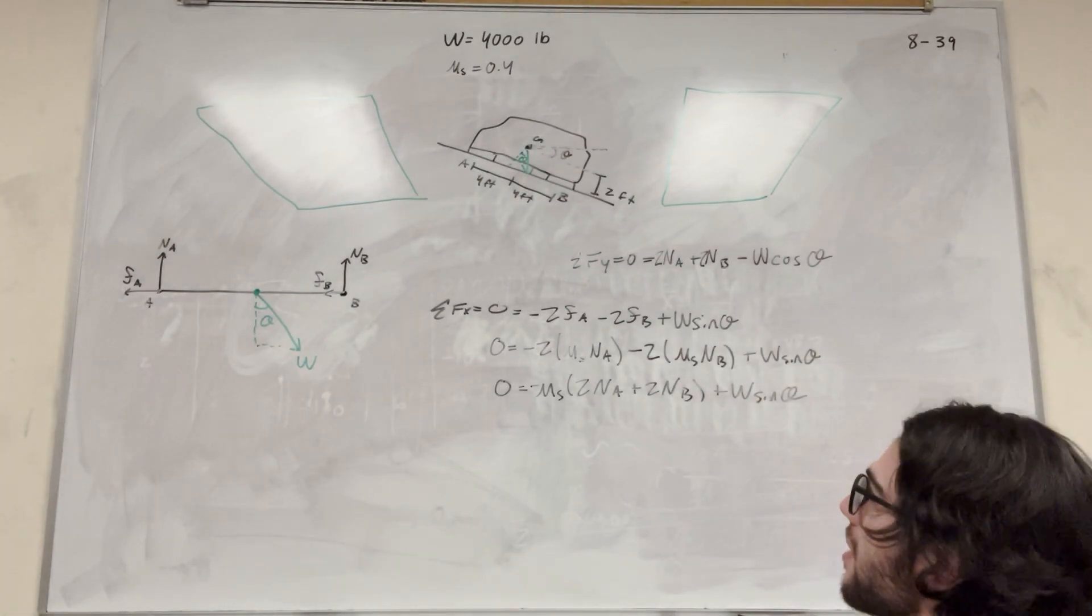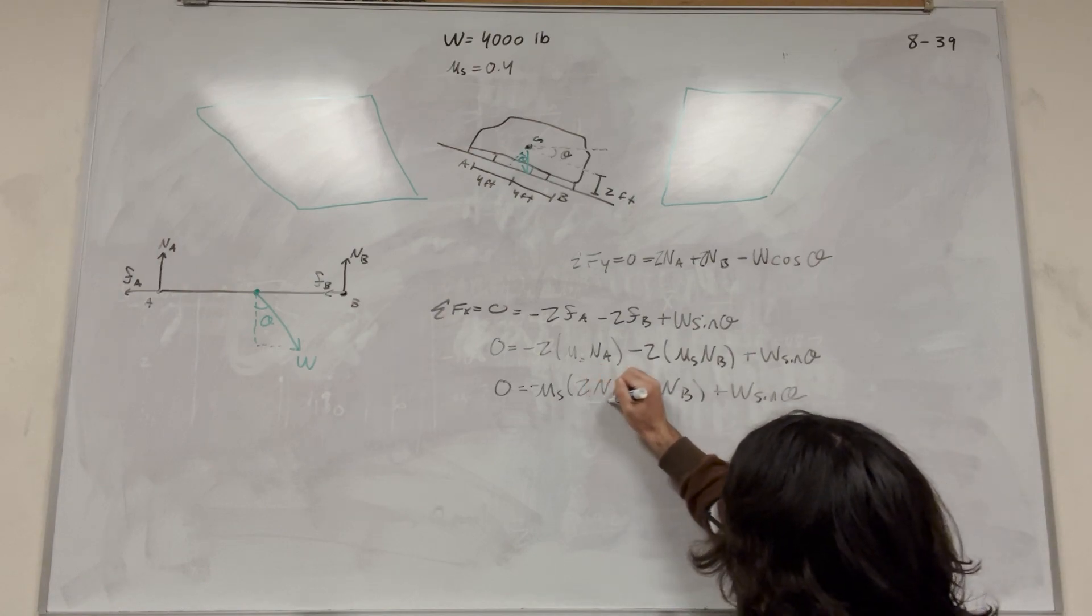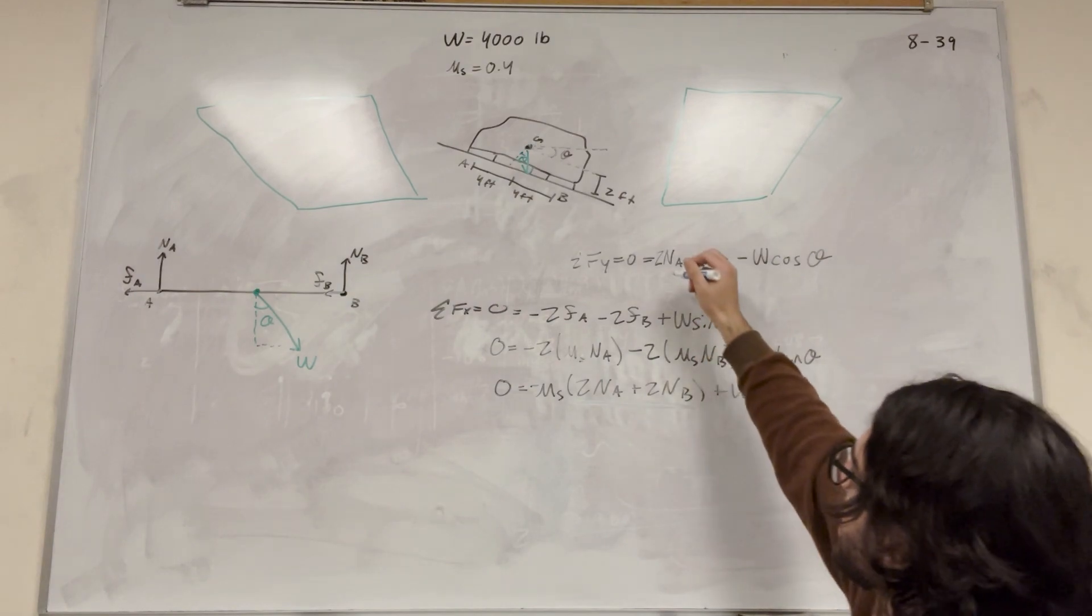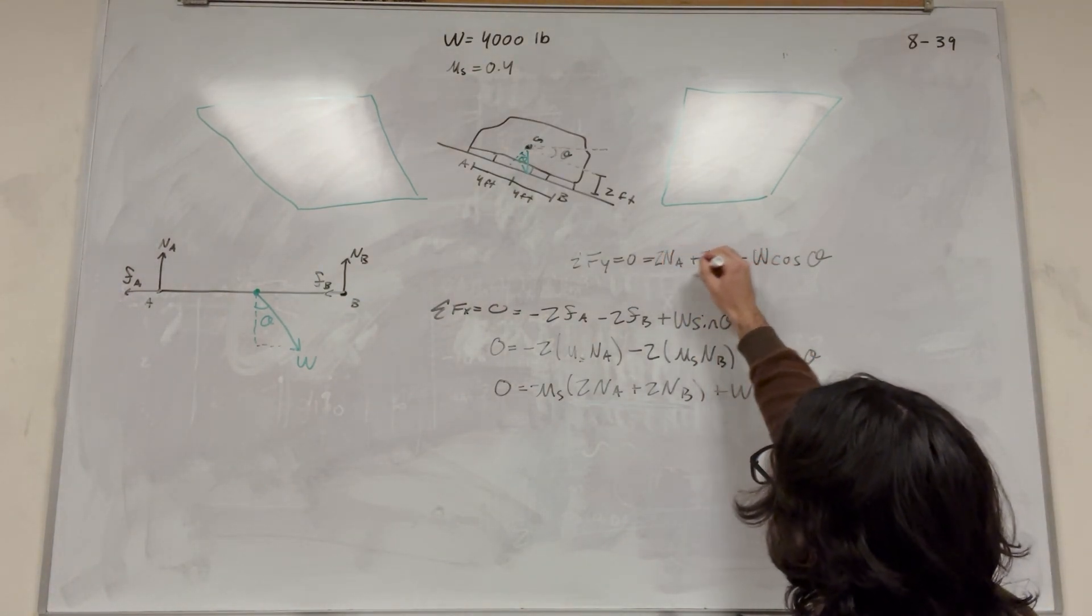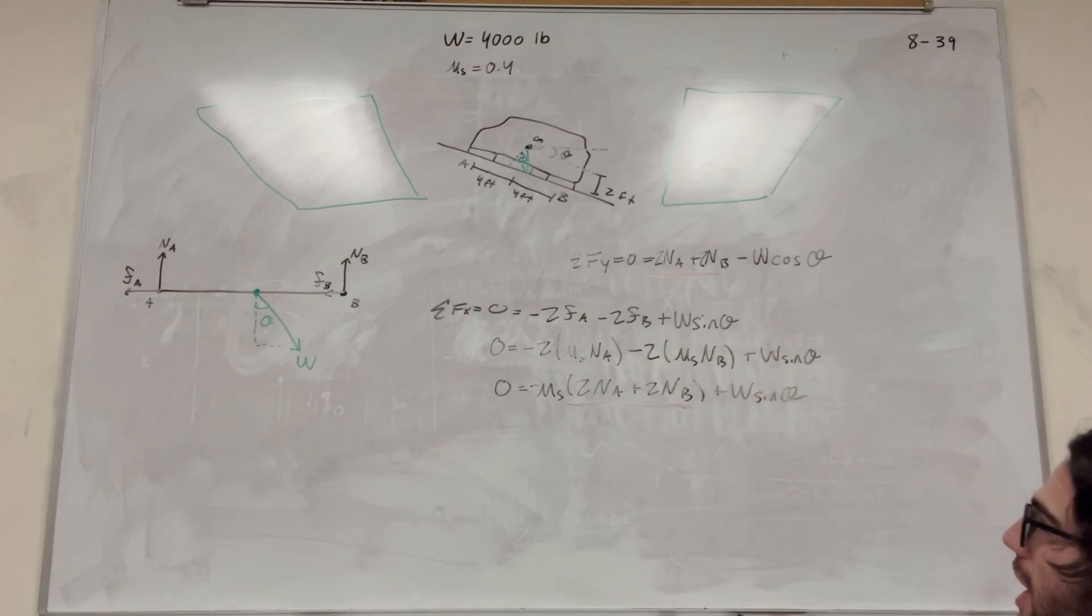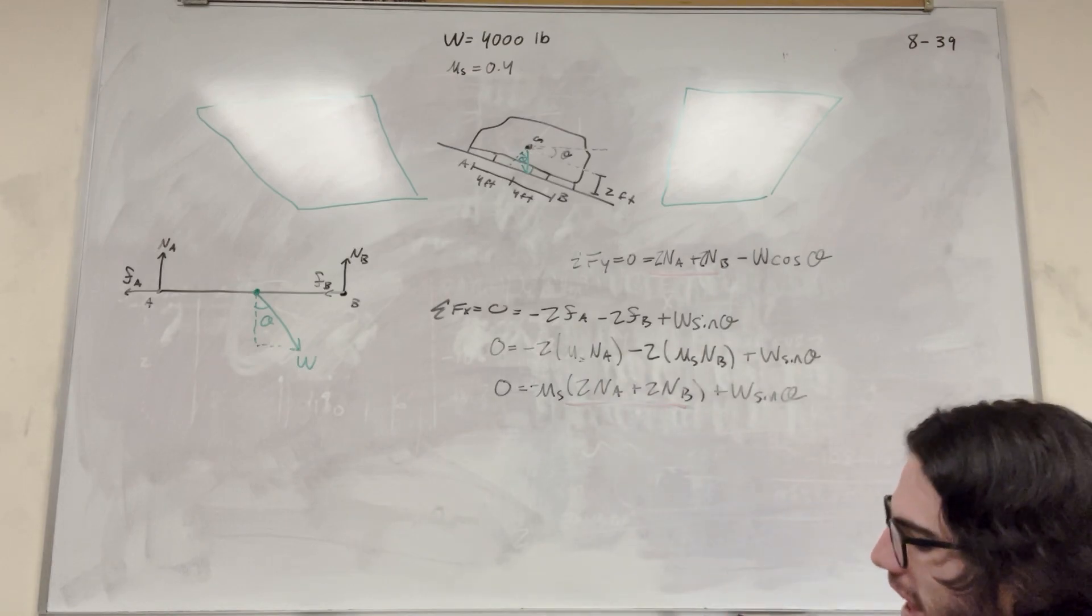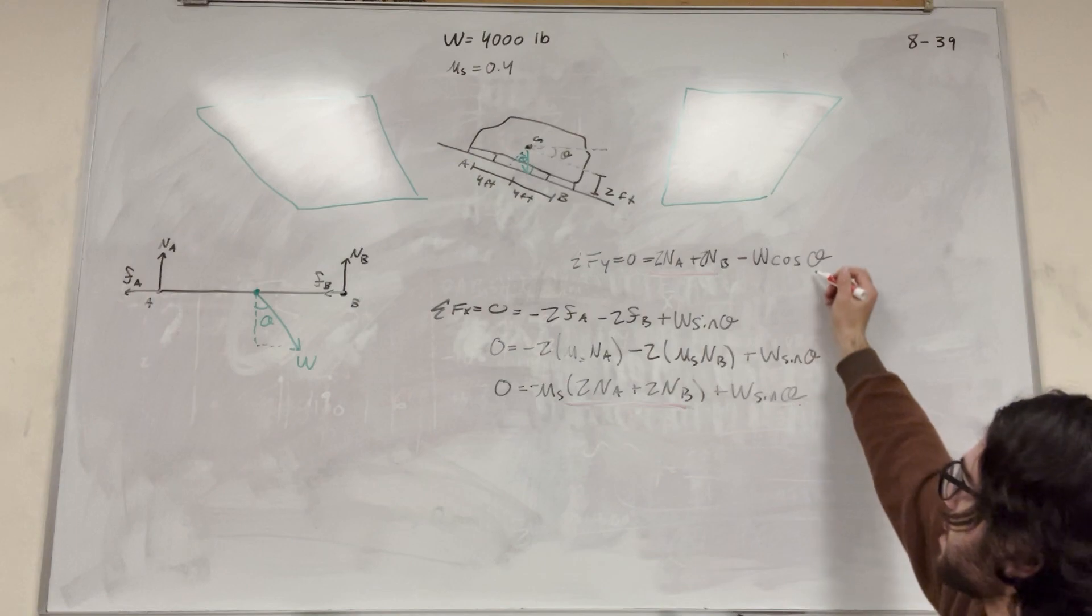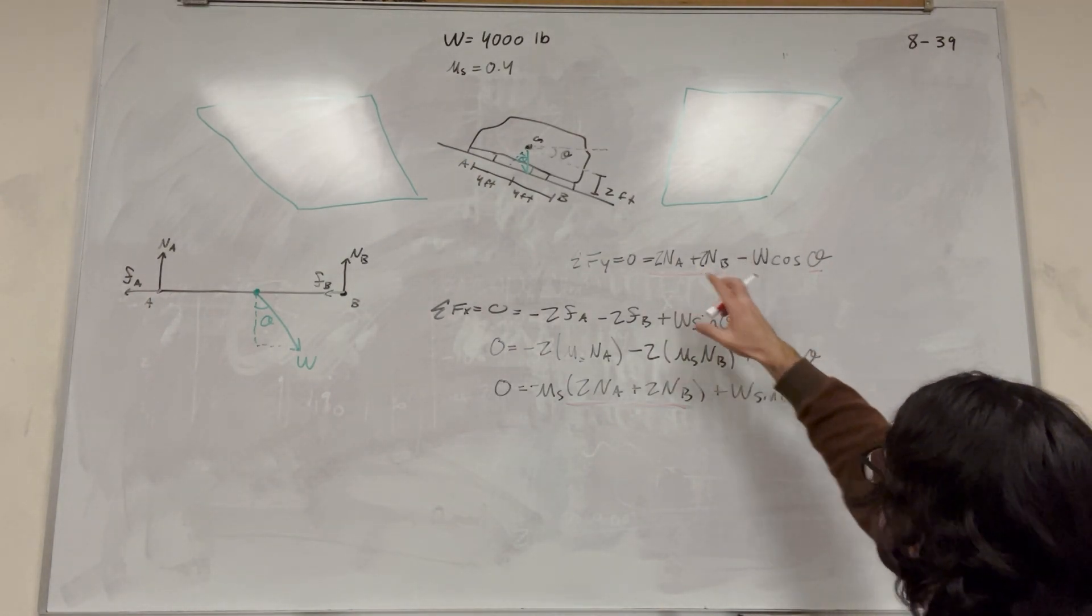Alright, so let's go ahead and finish solving this. So if we look at what we have here, we have two normal at A, and then two normal at A plus two normal at B. So what we can do is if we substitute this right into here, then basically all we have left is this theta and this theta. So that's how we want to do it. So let's try to get this by itself.